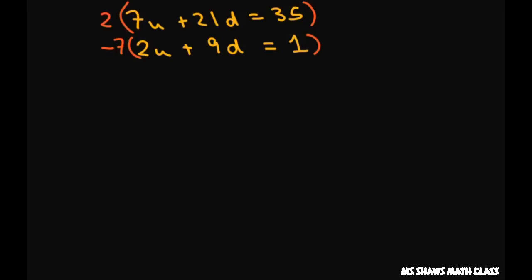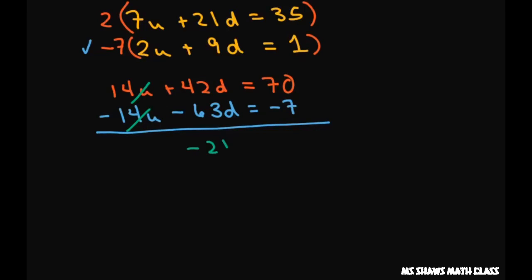So multiply through and you get 14U plus 42D equals 70. And then when you do the second equation, you get negative 14U minus 63D equals negative 7. Now what happens is these two get eliminated and you have negative 21D equals 63. Divide both sides by negative 21 and your D is negative 3.